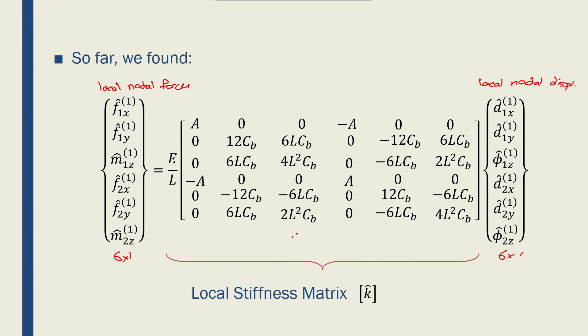This is a 6 by 6 SFS matrix written in global coordinate system or local coordinate system. I took the E over L out from the truss and beam SFS matrices and populated this matrix with the corresponding elements. Here A is the cross section area, CB is I over L squared, and L is the length of the beam.